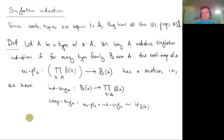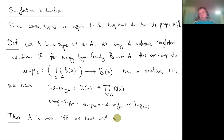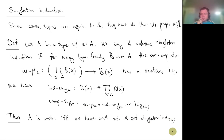For the unit type, if you apply the induction principle and evaluate at star you get judgmentally the element you started with. Here, by contrast, you get an identification instead of judgmental equality — the benefit being we can reason about it inside type theory. The theorem is: A is contractible if and only if there exists a point a in A such that A satisfies singleton induction with respect to a.